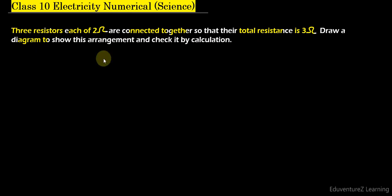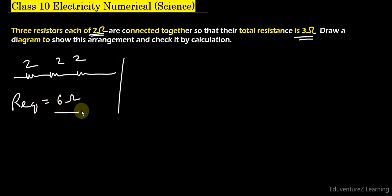Look here, we have to find the total resistance as 3 ohms. If we connect all the 2 ohm resistors in series, then we will get an equivalent resistance of 6 ohms, which is not required.